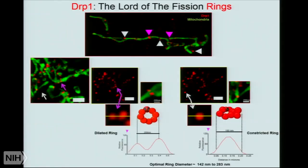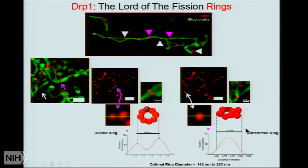You must be wondering why mitochondria fragments. There are many different mechanisms by which mitochondria fragment. One very interesting mechanism involves a protein called DRP1. We call it the Lord of Fission and Rings, because this protein, which is in the cytoplasm, can move to the mitochondria, wrap around it, and form a ring. By doing this, it squeezes the mitochondria and separates it into smaller fragments. We developed a super-resolution microscopy-based approach to measure each individual ring inside the cell.